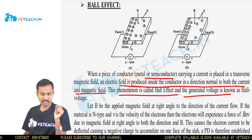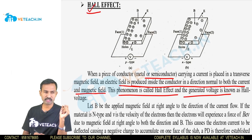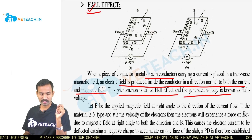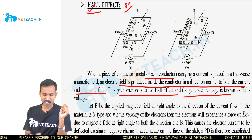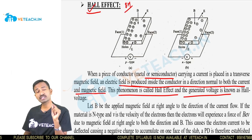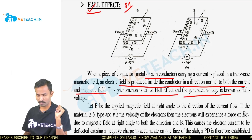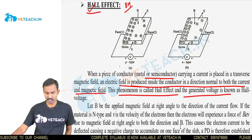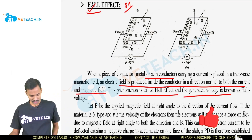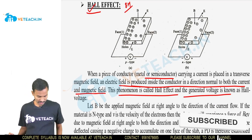This effect was first discovered by Mr. Hall — Hall is the scientist. The Hall Effect, and inside the conductor a magnetic field produces a perpendicular electric field. For the 8-mark derivation, we need to find this relationship.